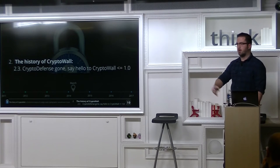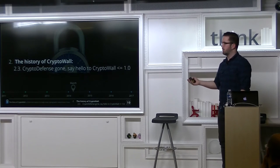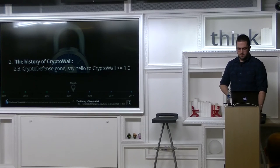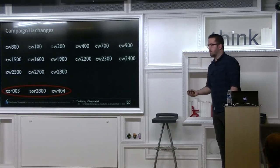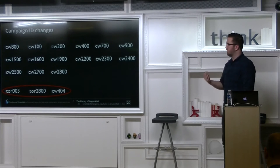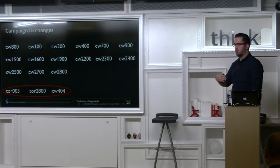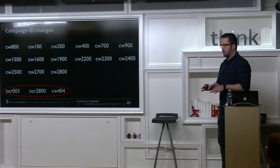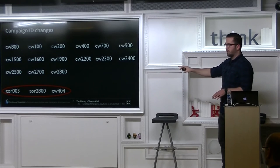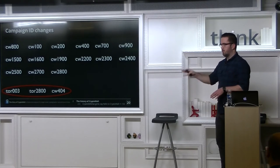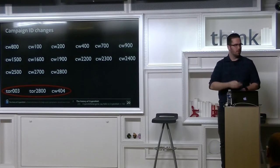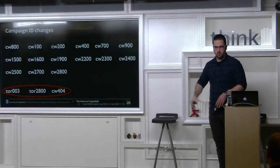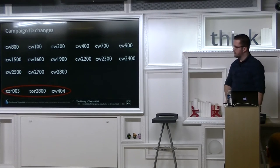At some point Symantec published about this, and in less than 24 hours they had it fixed. They pay close attention to what's being published about them. With that flaw exposed, they fixed it, trashed the CryptoDefense name because people knew you could decrypt it, and moved on. They called themselves CryptoWall 1.0 in March 2014 — pretty quickly. Campaign IDs changed again to 'CW' with incremental version numbers. There were some Tor versions in campaigns that would talk directly on Tor with no proxy servers, and they also made a CW 404 campaign — probably just a joke.